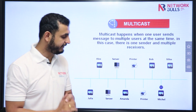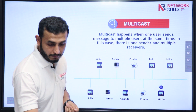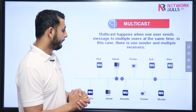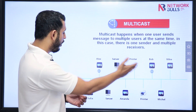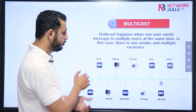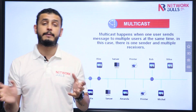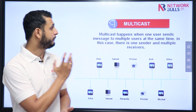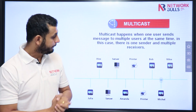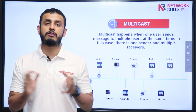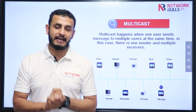Like you can see here, Michael is the sender, but Bob, Alex, and Julia are receiving the information. So this particular type of communication is called multicast.